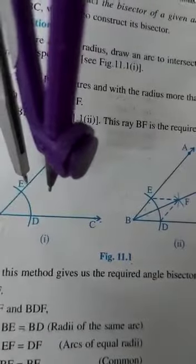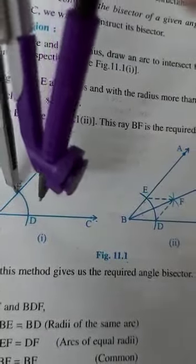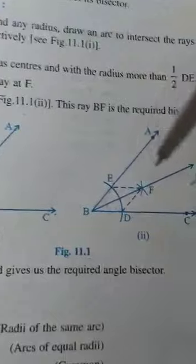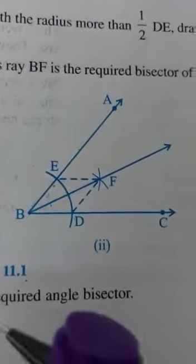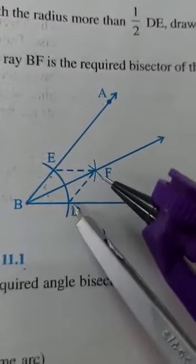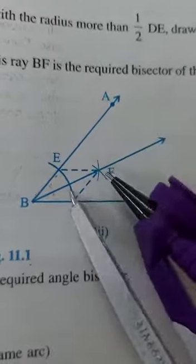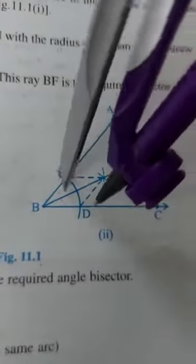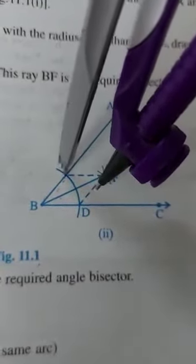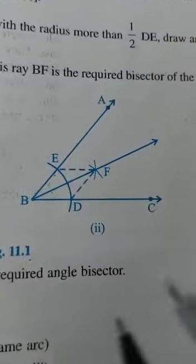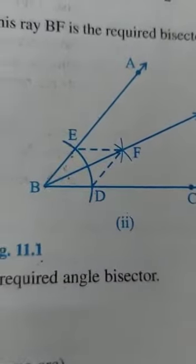Using the same radius, place the compass at E and draw an arc. These two arcs intersect at point F.